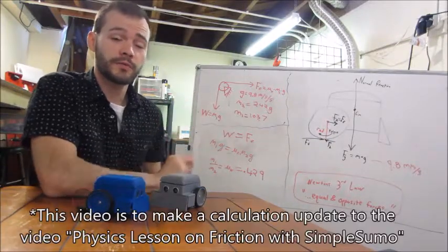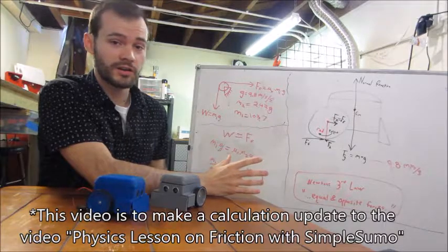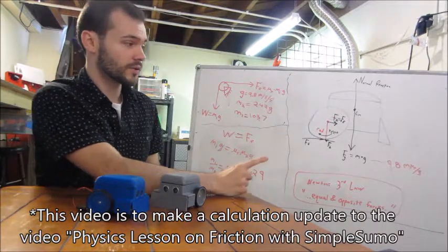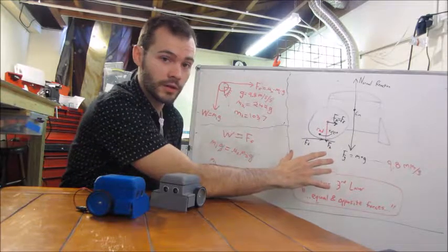To pick up what we left off last time, we were actually using an imperfect model to calculate the coefficient of friction. If you take a look at the free body diagram, we just left it simple, quick, and easy to understand.